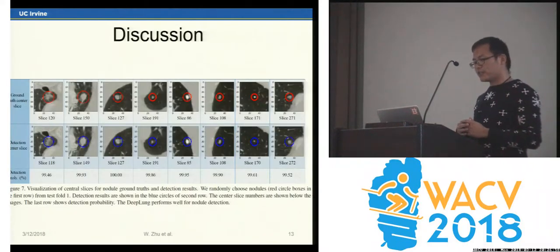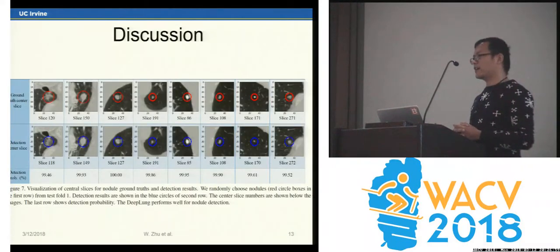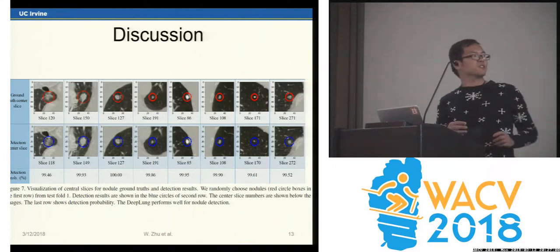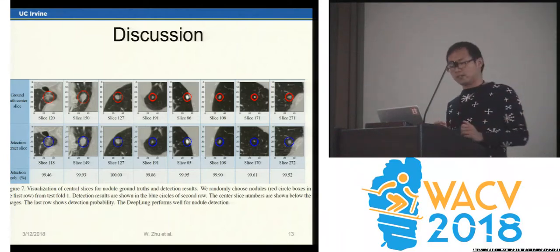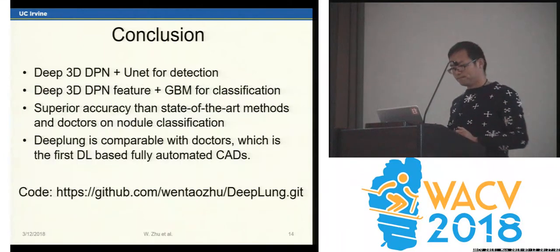From the visualization, DPN detects well for these randomly chosen nodules.